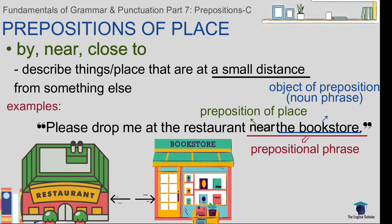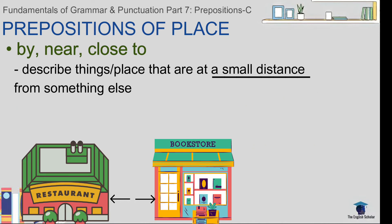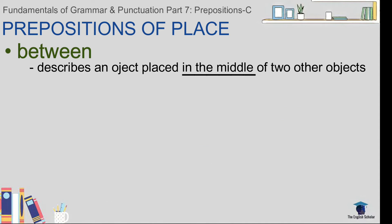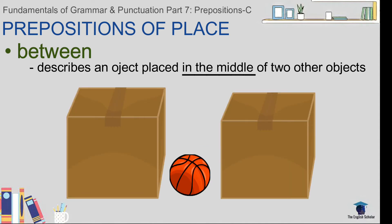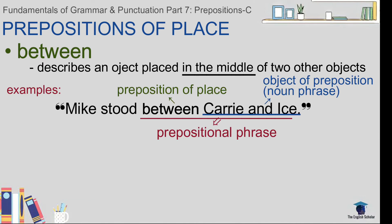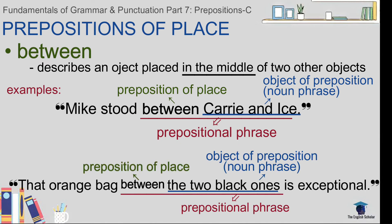Next: 'between.' 'Between' describes an object that is in the middle of two things. For example: 'Mike stood between Carrie and Ice.' Another example: 'That orange bag between the two black ones is exceptional.'